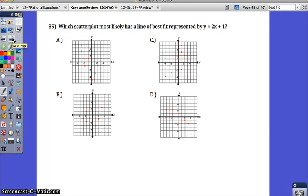Problem number 89. Which scatterplot most likely has a line of best fit represented by y equals 2x plus 1? Well, I would start by thinking about what this line looks like. This line has a positive slope. So I would look at your data and see what data has a positive trend. When I look at the first data set, I can see these points. They're kind of trickling down as I move to the right. This has a negative correlation, which means it would have a negative slope. So I don't think A would have a line of best fit that's the same as that line.